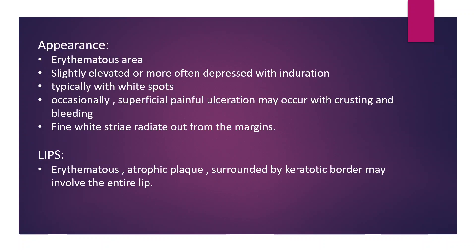Appearance: erythematous area, slightly elevated or more often depressed with induration, typically with white spots. Occasionally, superficial painful ulceration may occur with thrusting or bleeding. Fine white striae radiate out from the margins. Lips: erythematous atrophic plaque surrounded by a keratotic border may involve the lower lip.